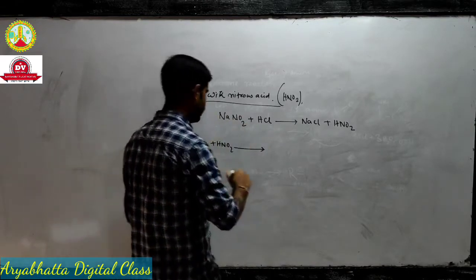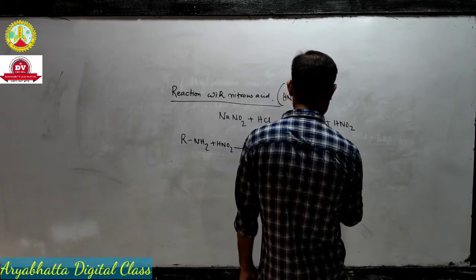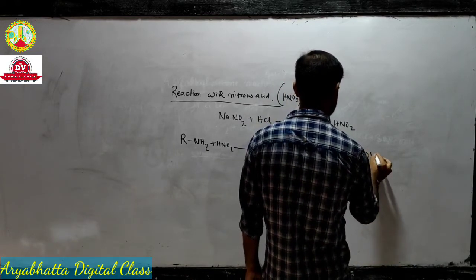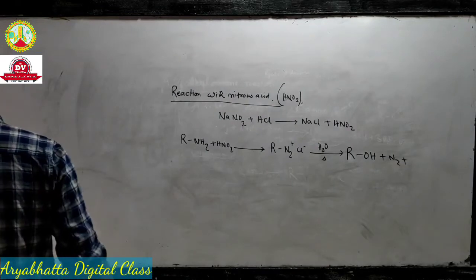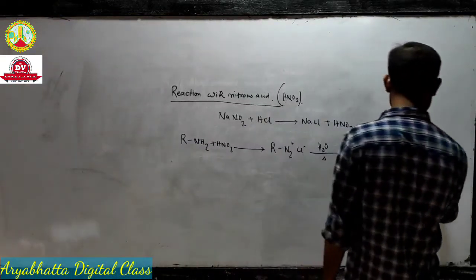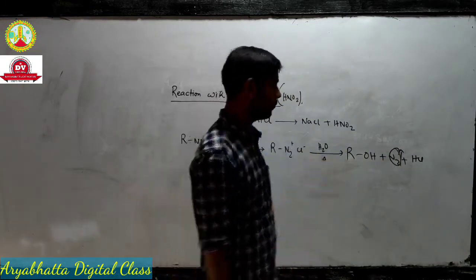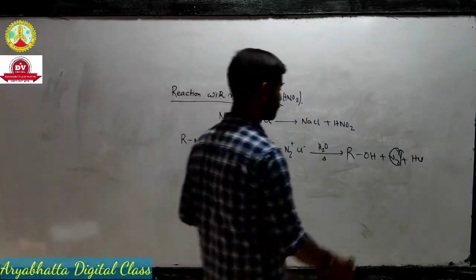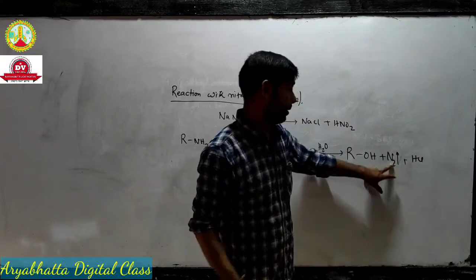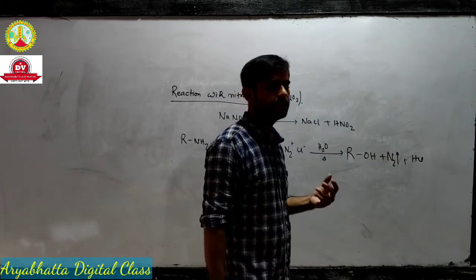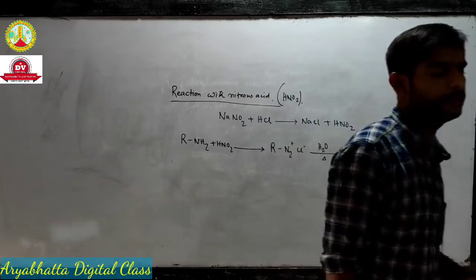Instead of HNO2, they can give you NaNO2 and HCl. We get a diazonium salt, and heating with water will give N2 and HCl. The amount of nitrogen gas produced here can be analyzed quantitatively.